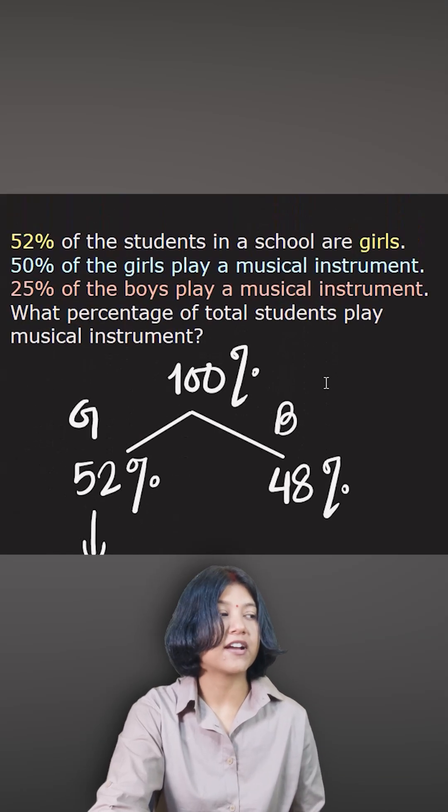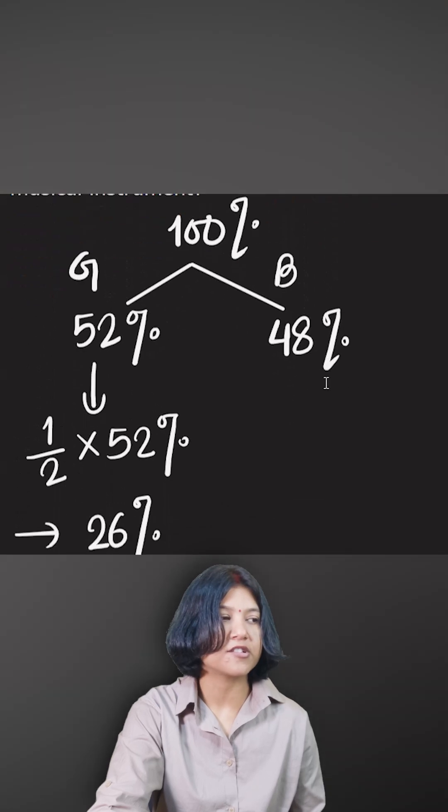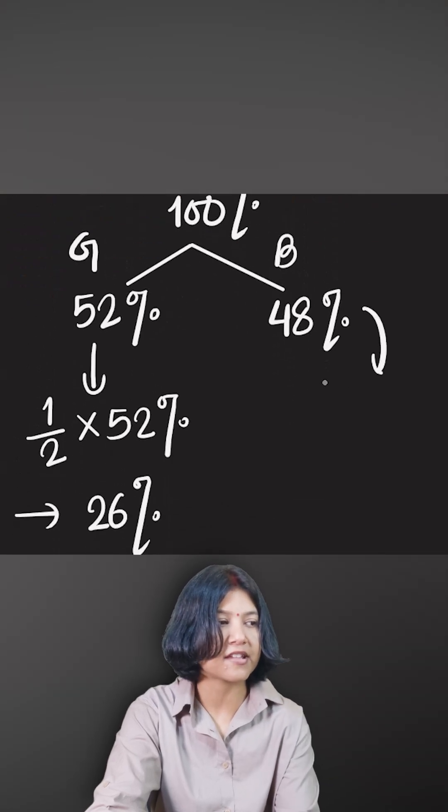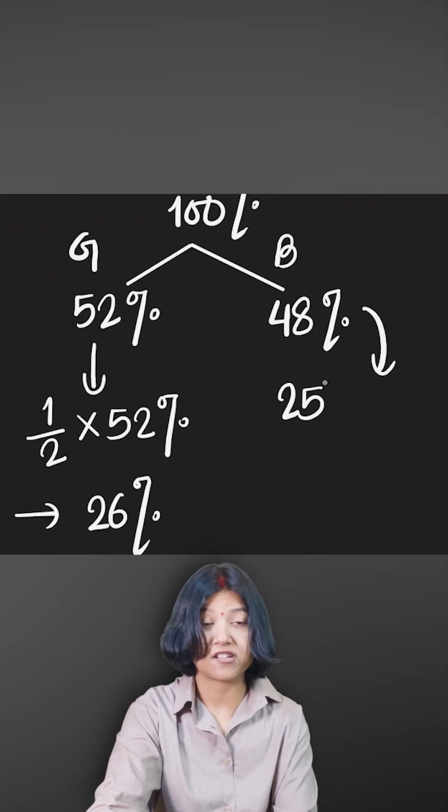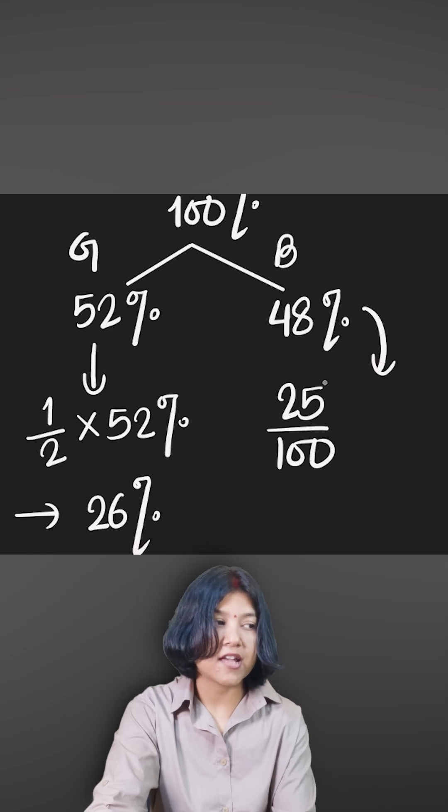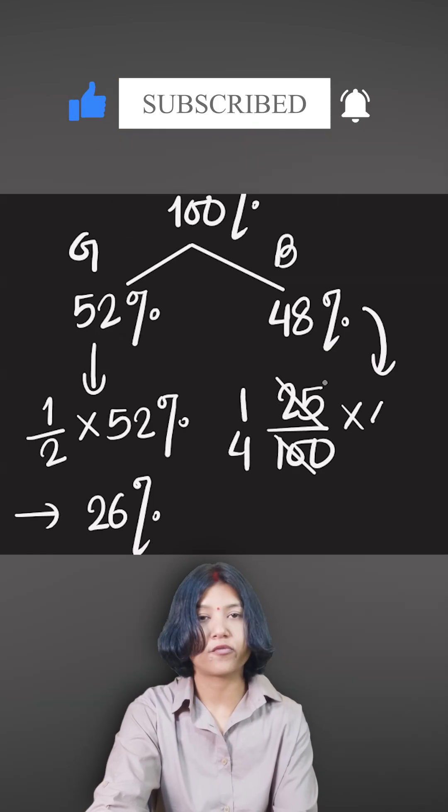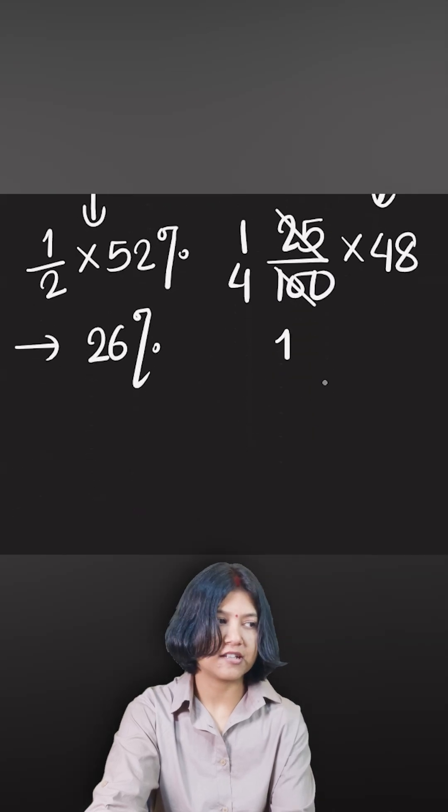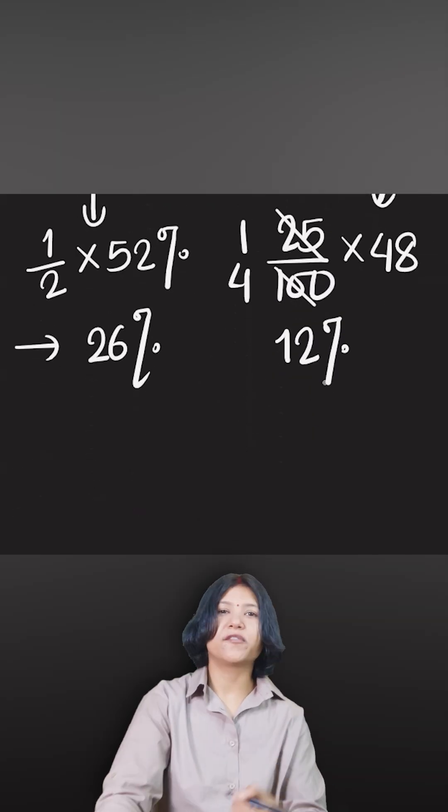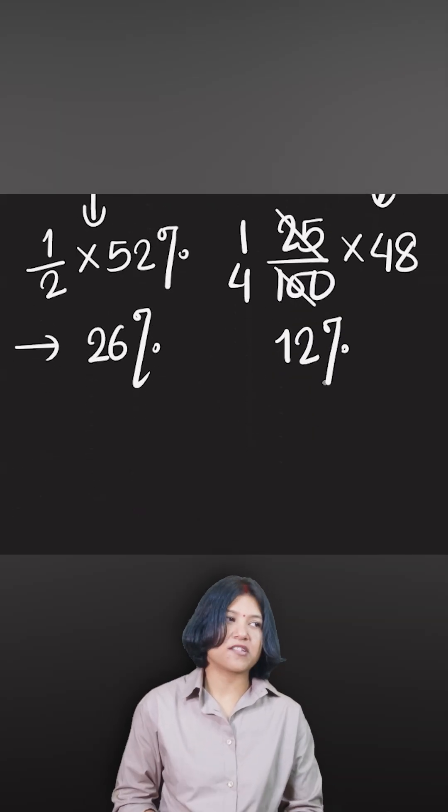Similarly, the question has told you 25% of the boys play a musical instrument. So I have to find 25%. Again, 25% is just a quarter. So quarter is simply like one fourth. And so you want to find one fourth of 48, which is just 12. 12%. So 12% of the total students are boys who play musical instrument.